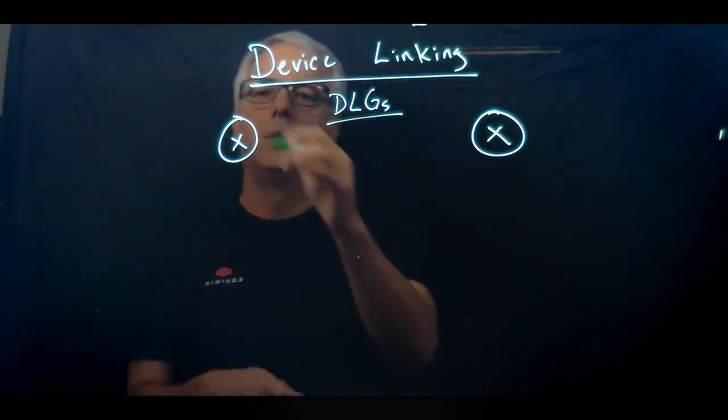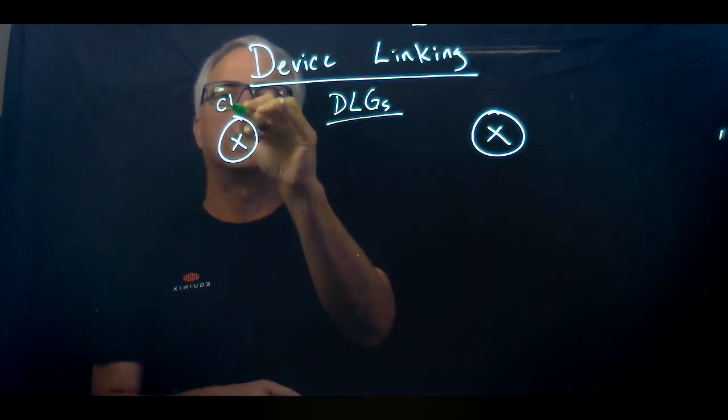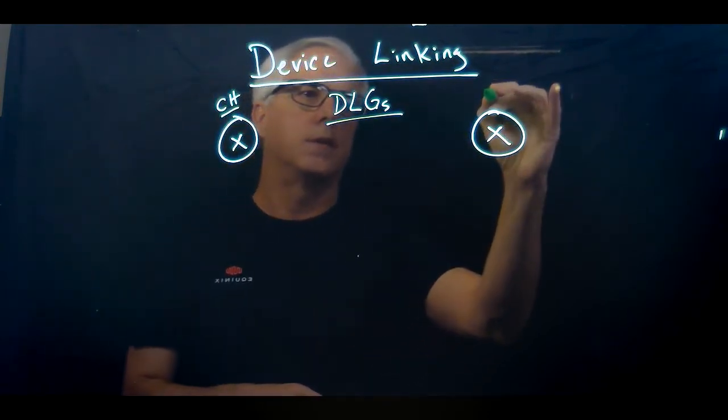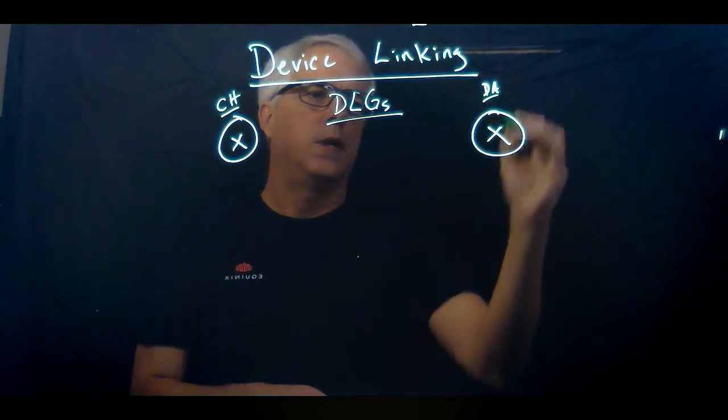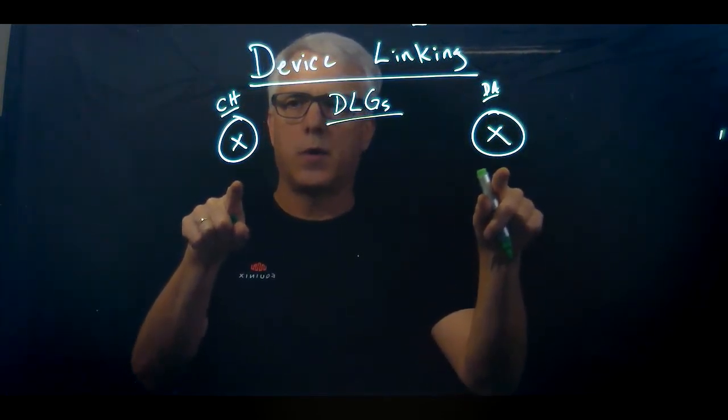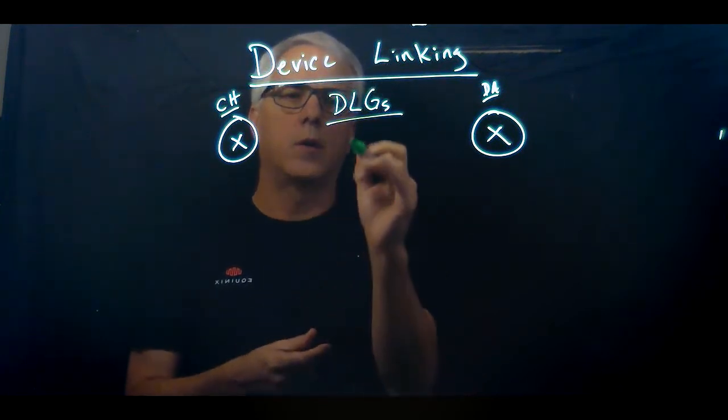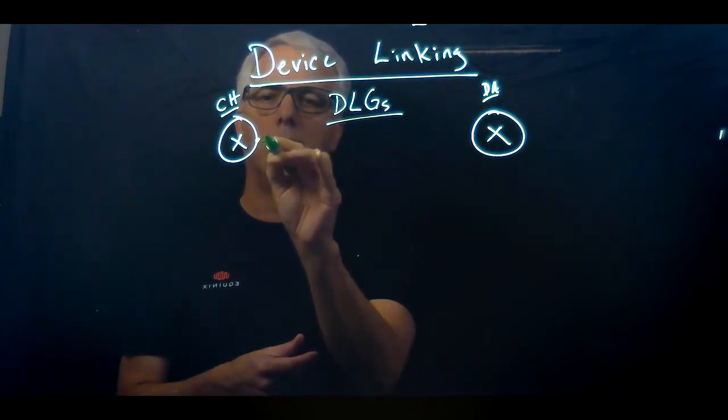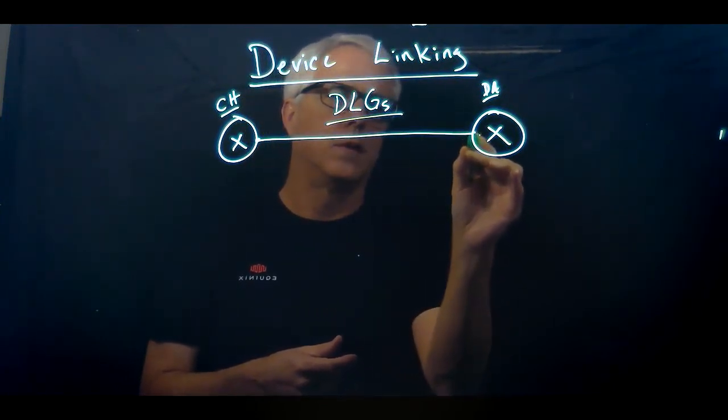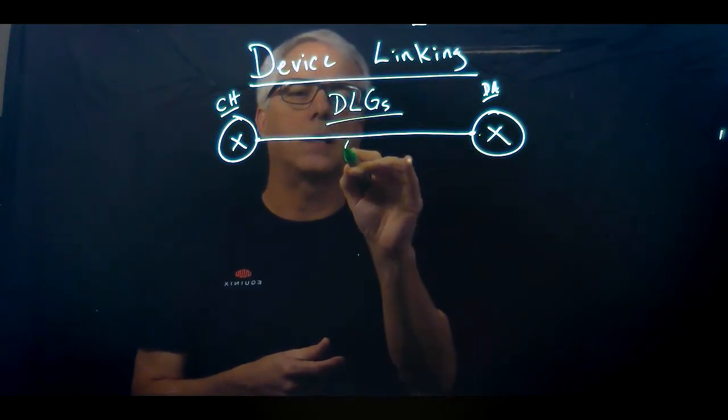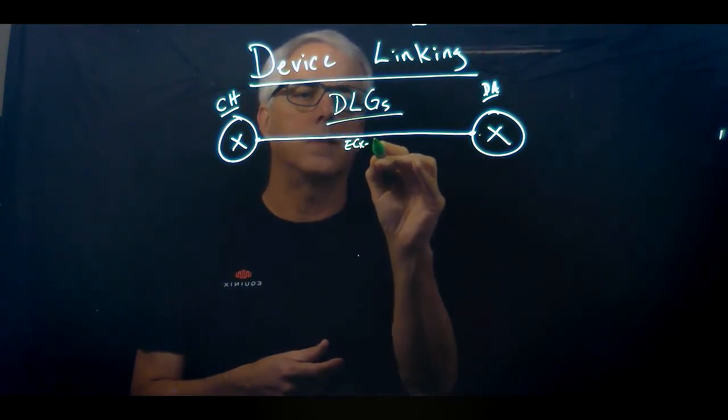For example, say this was the Chicago Metro and this is the Dallas Metro. If a customer had spun up two network edge devices and they wanted to connect Chicago to Dallas, they would create a device link group from Chicago to Dallas. It will connect across the fabric like that. These connections are going across the ECX fabric.